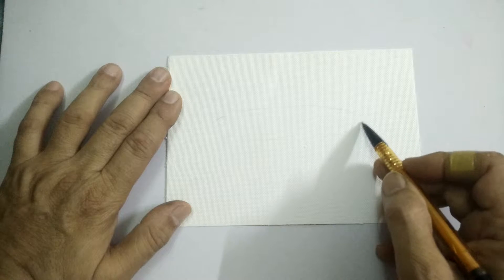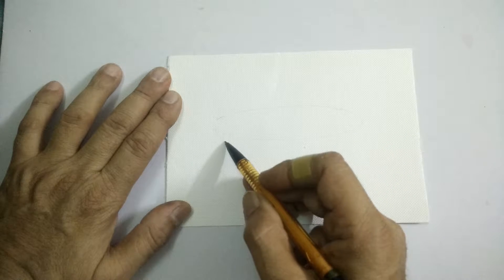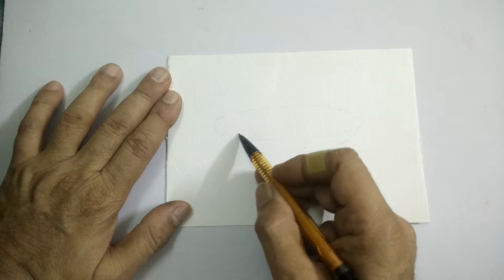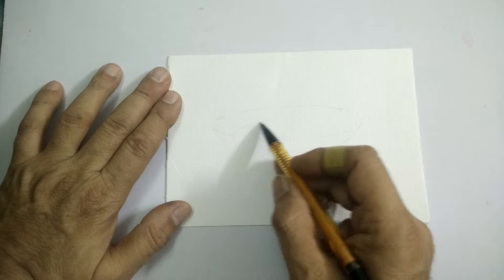In light pencil, sketch the general shape of the pan and show some of the inside.